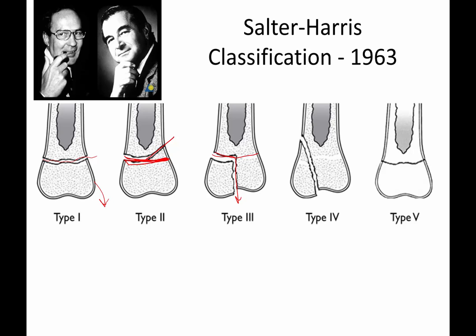The problem with a type 3 is it exits through the articular surface, so now you have an articular fracture with a step-off. A type 4 fracture actually crosses the growth plate, going from the metaphysis through the epiphysis. A type 5 fracture is a crush injury of the growth plate that you may not really see at all — it's only diagnosed in retrospect. The patient has an injury, you suspect the growth plate and hope it's a type 1, but then the bone stops growing completely, and you realize it was a type 5 that shut down the whole growth plate.